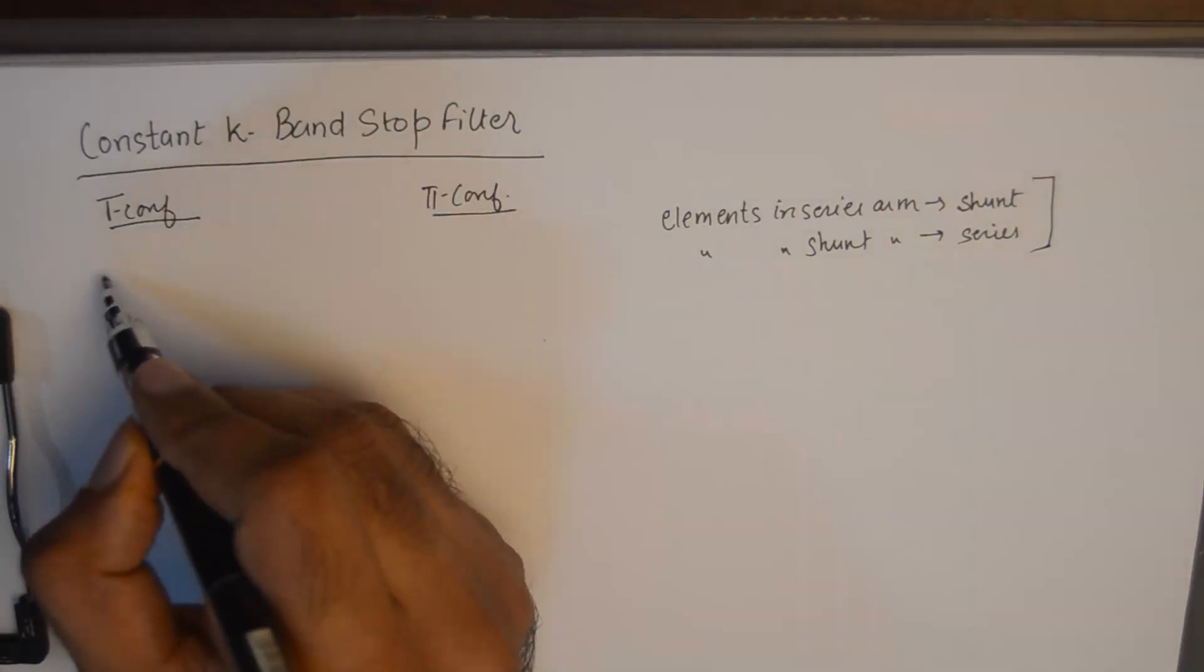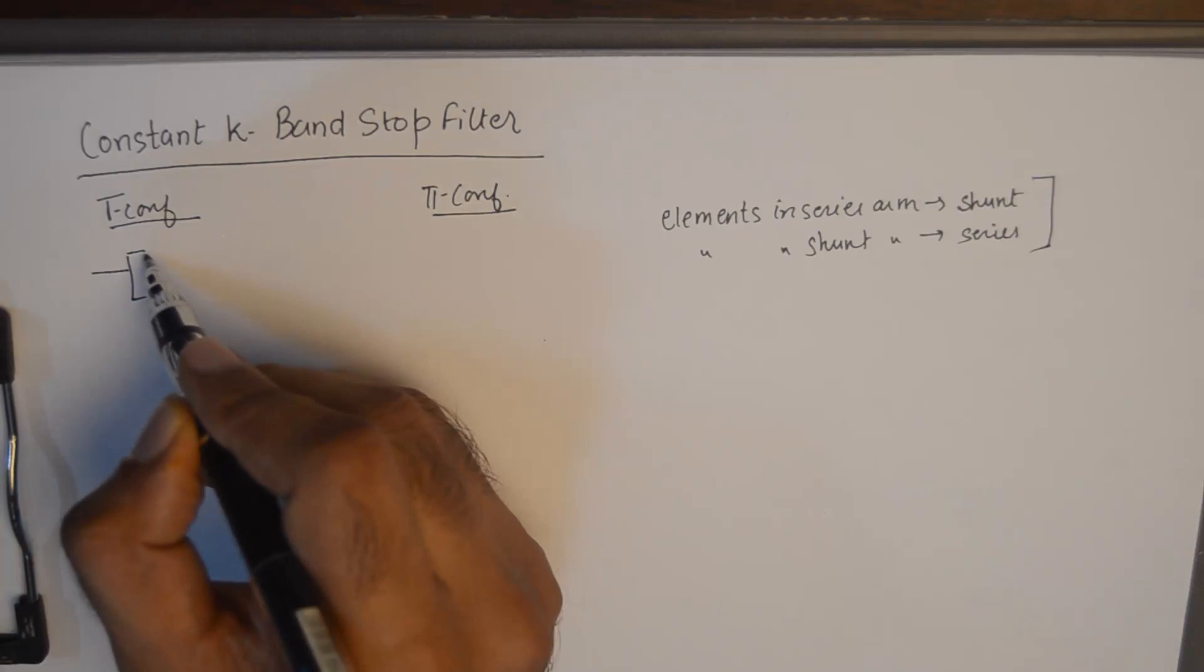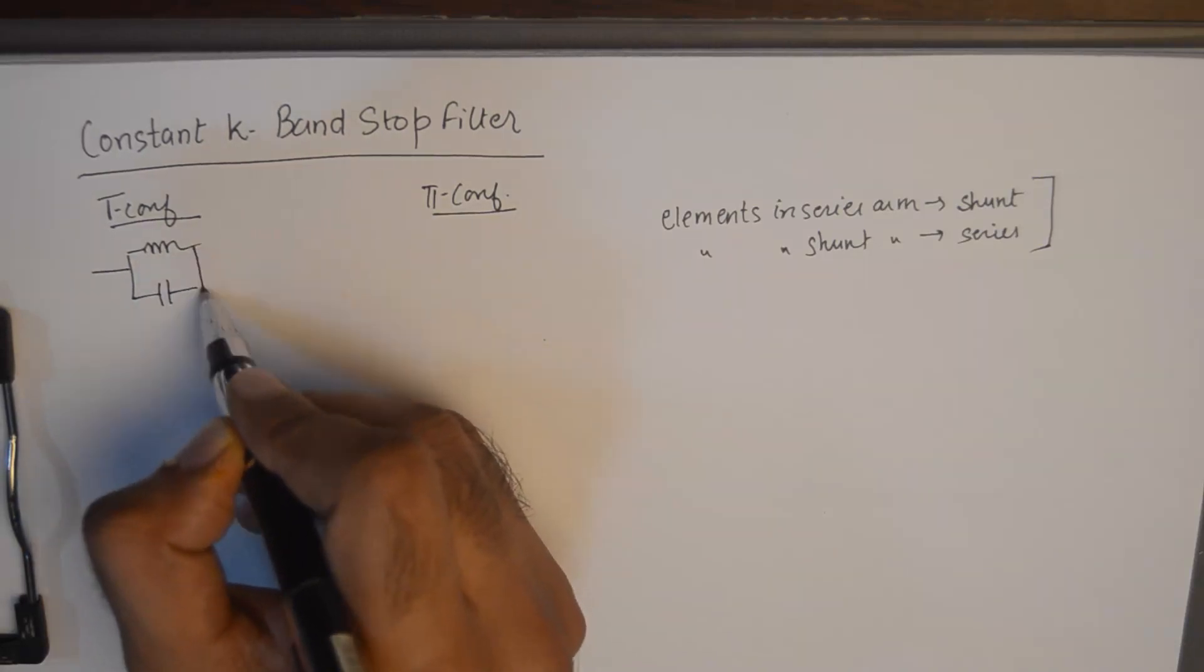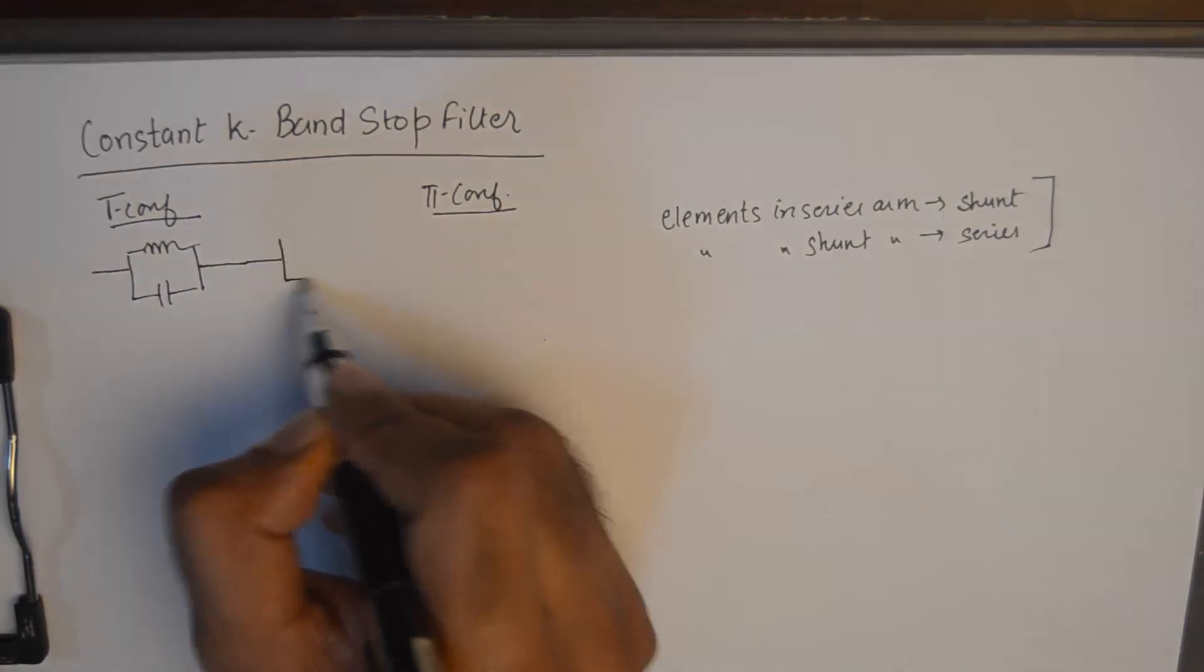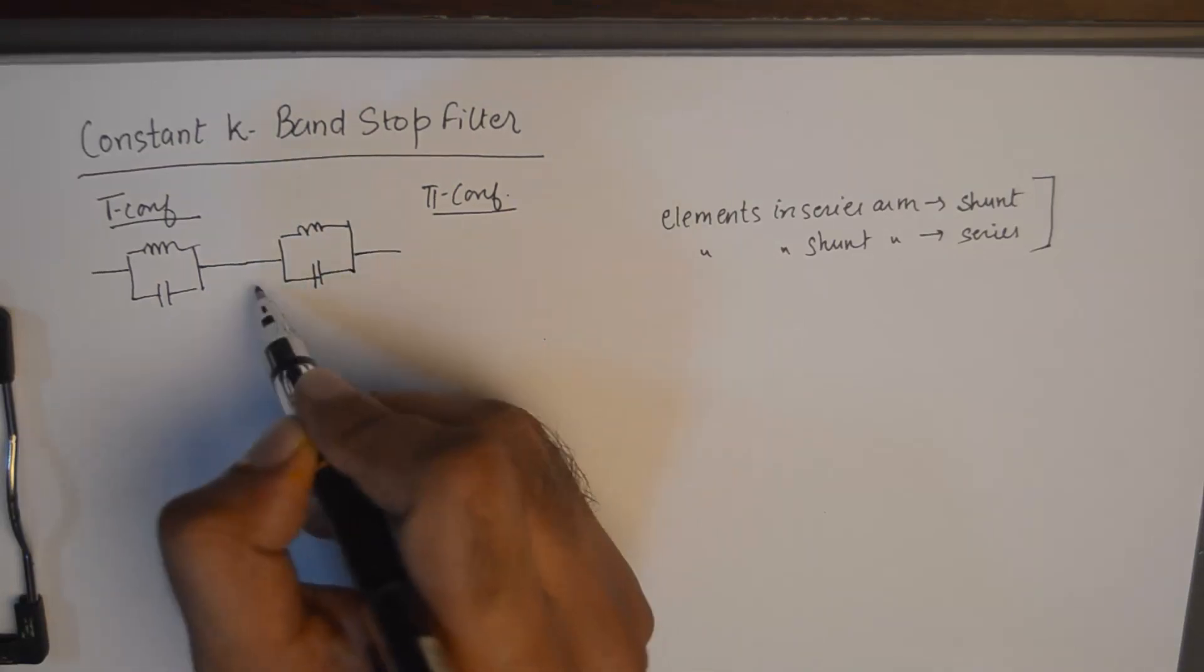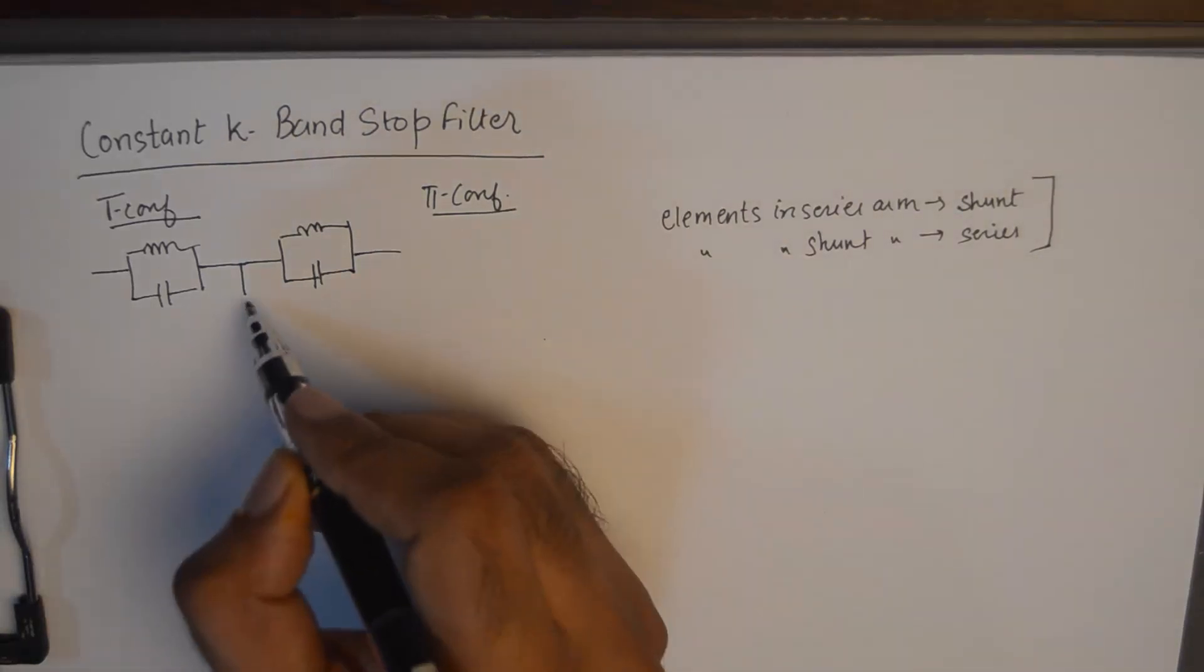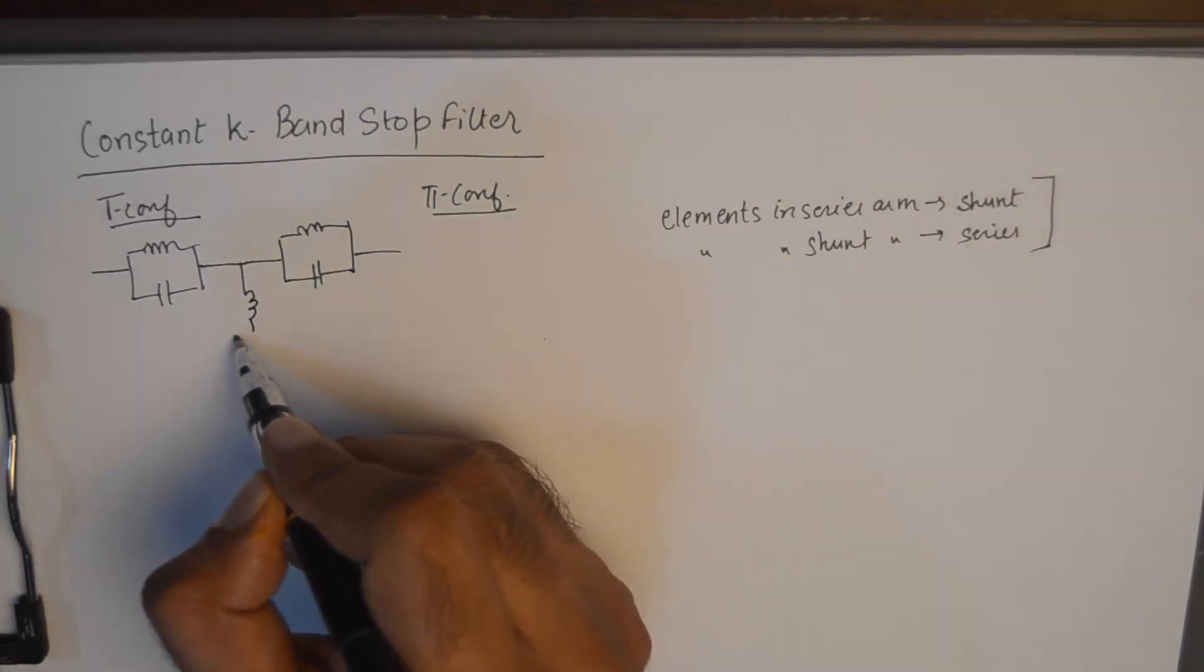So how do you design this? For T configuration you will need to put both the elements L and C but they will need to be in shunt, like this. And in the shunt arm you will need to place both the elements but they will be in series.